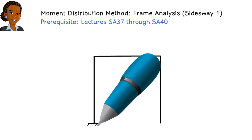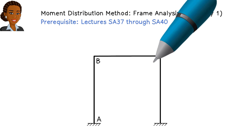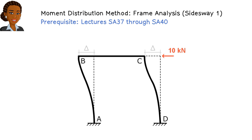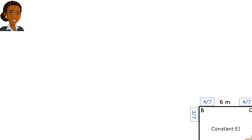Here is a frame structure that undergoes side sway due to a horizontal joint load. How do we analyze such a frame using the moment distribution method? We know how to calculate the distribution factors for the joints. Here they are.